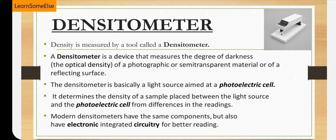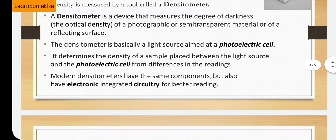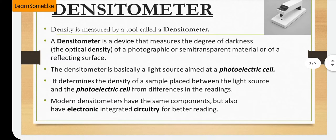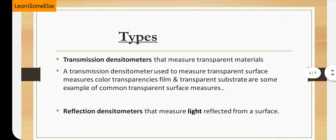Modern densitometers have the same components but also have electronic integrated circuitry for better readings. There are two types: first, the transmission densitometer, which measures transparent materials such as color transparencies, film, and transparent substrates. Second is the reflection densitometer, that measures light reflected from a surface.